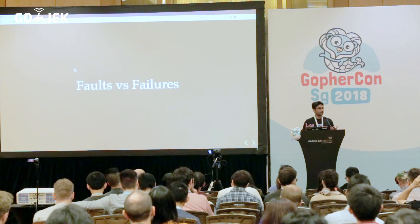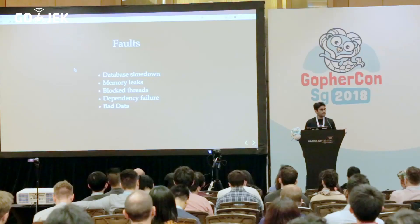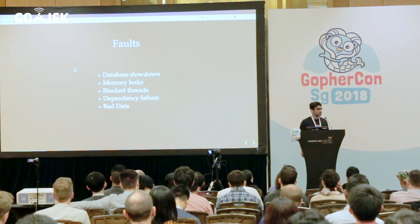Let's start with basic definitions — what are faults, what are failures. A fault can be thought of as something which is an incorrect internal state within your complex system. Examples include database slowdowns, memory leaks, locked threads — in Go's case, locked goroutines — dependency failures, and bad data which got propagated within your systems because you don't have proper validations. All of these are examples of faults in your system.